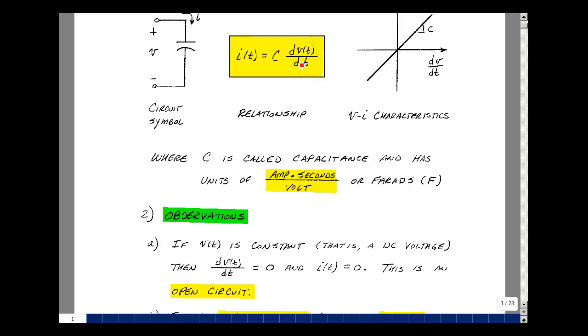I can make some observations about this equation. If you had a V of t that was constant, in other words, a DC voltage, then its derivative is equal to zero. The current through a capacitance for a DC voltage is going to be equal to zero, and that's our definition of an open circuit. I can have voltage across an element, but the current through it is zero.